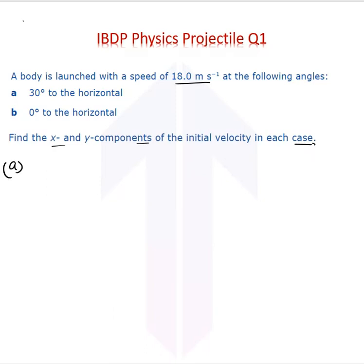In the first case, when it is launched at theta equals 30 degrees to the horizontal, our initial velocity would have two components: ux equals u cos 30, and uy equals u sin 30.